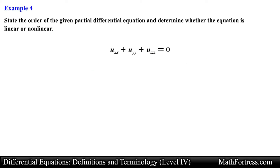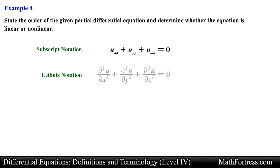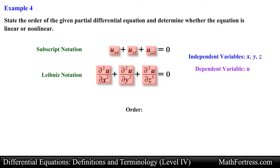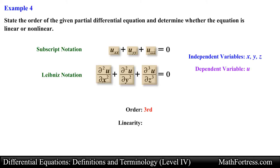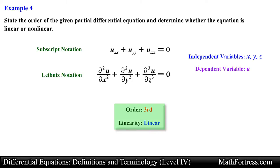Let's try the next example. This PDE is written using subscript notation. We can also rewrite it using Leibniz notation. The dependent variable is u and the independent variables are x, y, and z. For the order, we have three partial derivatives; the highest is a third partial derivative, so this PDE is third order. Checking linearity: the partial derivatives are all raised to the power of 1, there are no products involving the dependent variable, and the equation contains no transcendental functions in terms of the dependent variable. All three criteria are met, so this PDE is linear. In the end, this equation is a third order linear PDE.